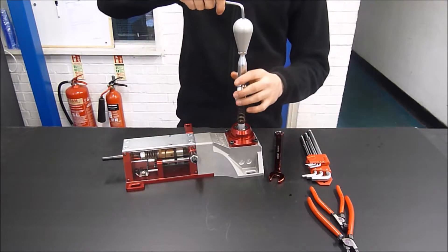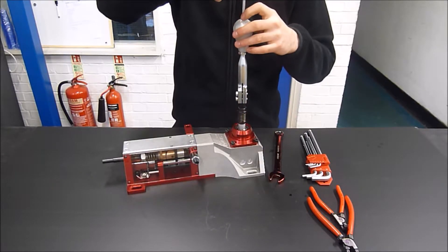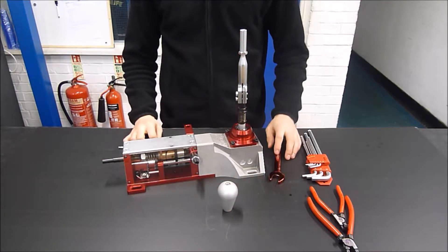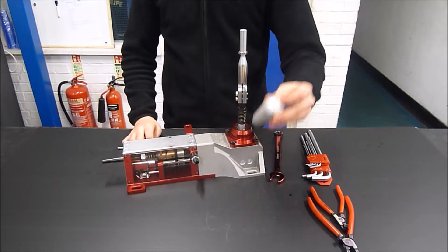Now with that as well, if you remove this, the thread is a standard M10 by 1.5 on the shaft extension below our adapter and you can fit any gear knob you want to that. Now the second adjustment